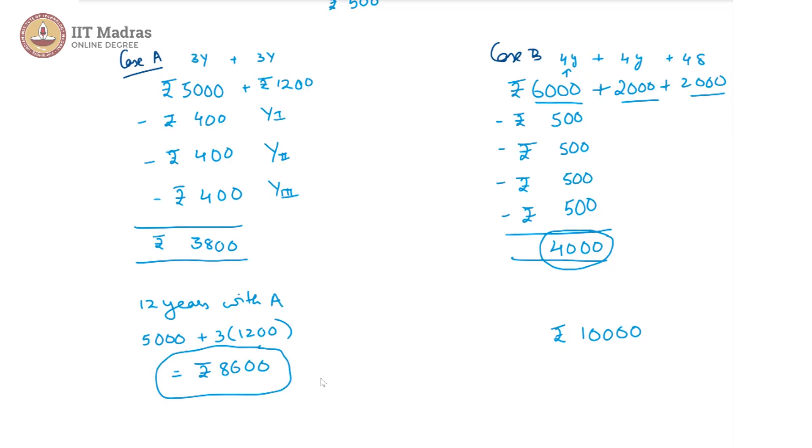Here we are not supposed to forget one thing though, that is at the end of, after these 3 years, after 12 years he can sell it off for 3,800. So we are supposed to further subtract 3,800 here. And likewise here he can sell it off for 4,000.